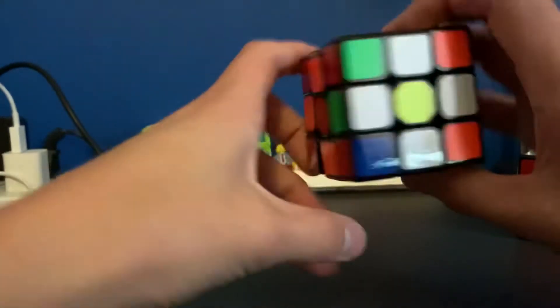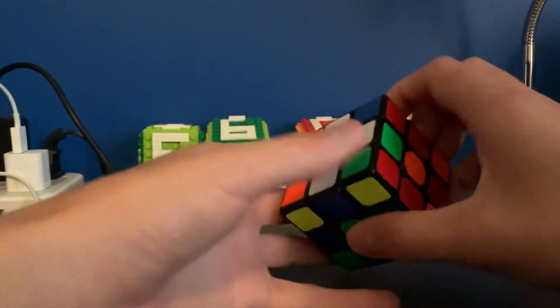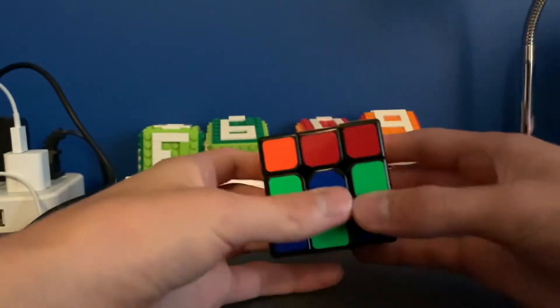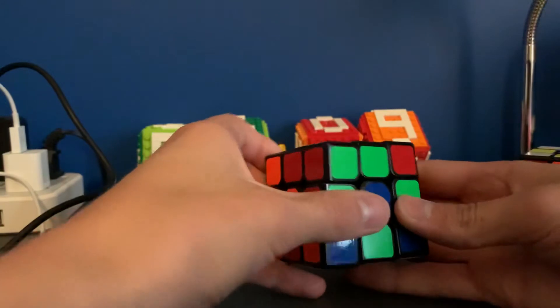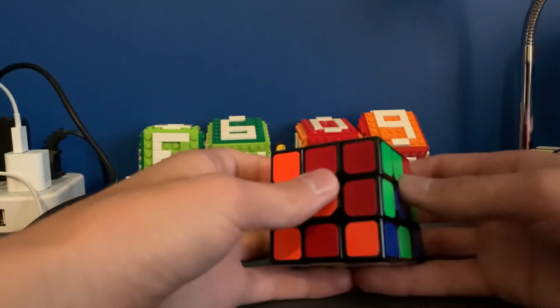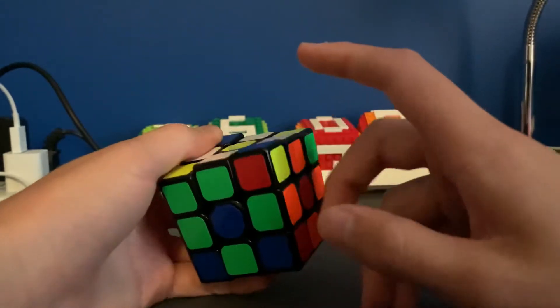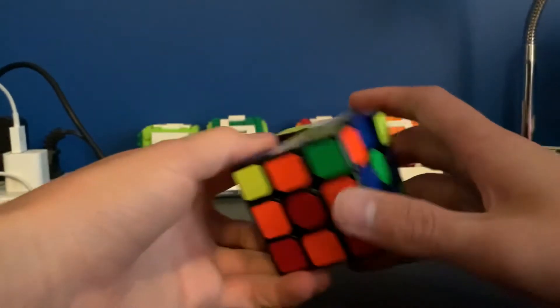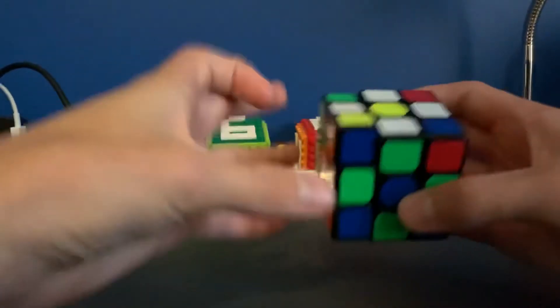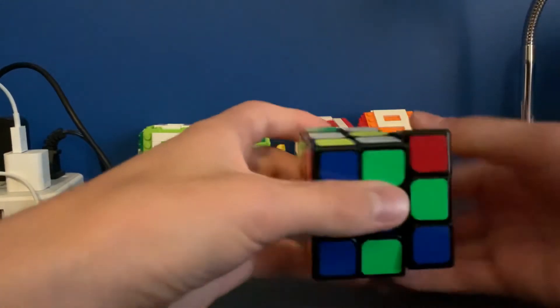This piece is right. Let's see. This piece is correct. Okay, so these two pieces are in the right spot. So I'm just going to do the beginner's method algorithm. Let's see. This piece isn't right. This piece is in the right spot. This piece isn't. And this piece isn't. So I'm just going to hold this on the right. I'm going to do the beginner's method algorithm.